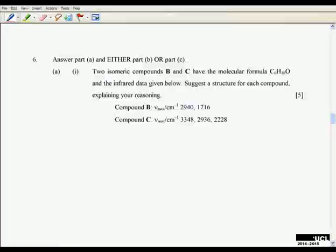Here's question 6. The first thing to note is the rubric of this question: answer part a and either part b or part c. You're not going to get any extra marks by answering both parts b and c, so before you start, look through the question and decide whether you're going to get more marks on part b or part c.